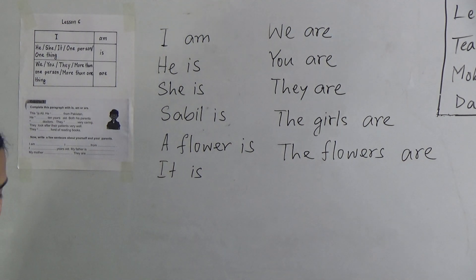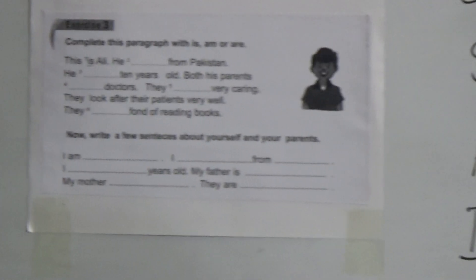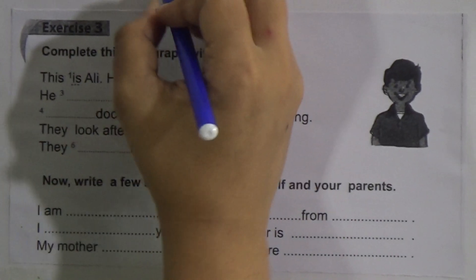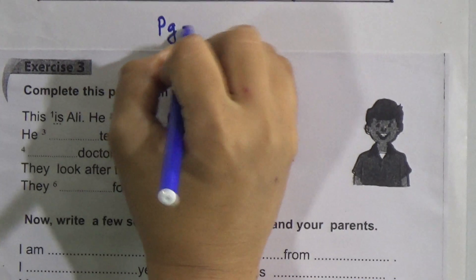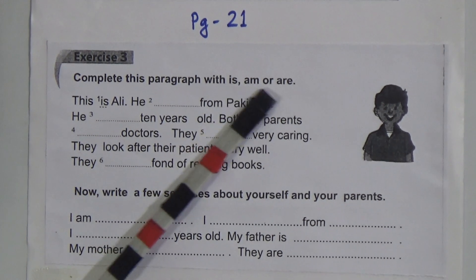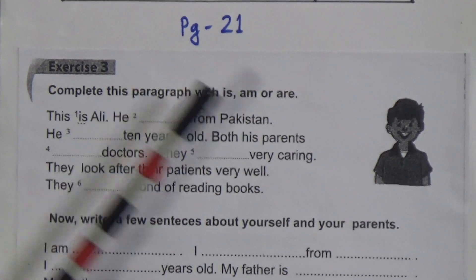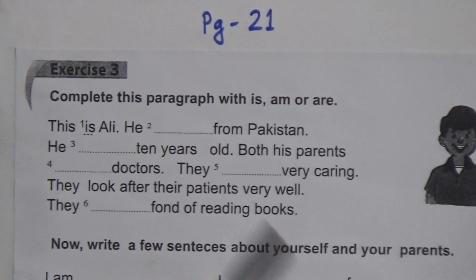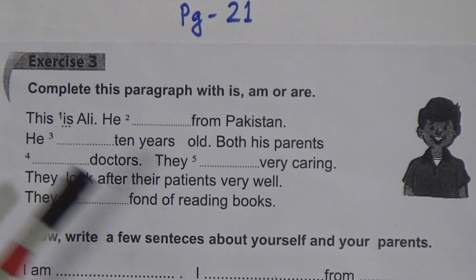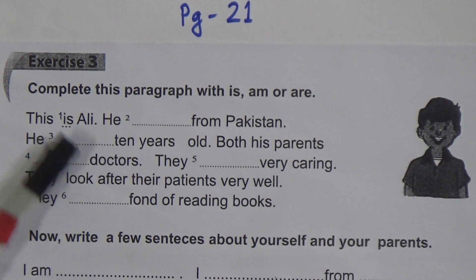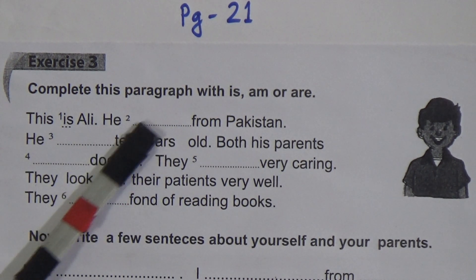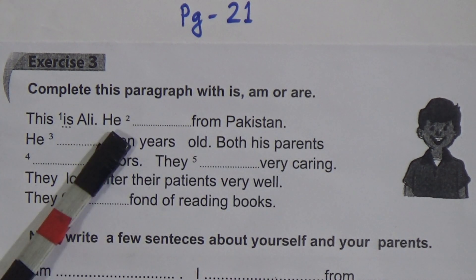Now we will do Exercise 3. Go to page number 21 in your book — page number 21, Exercise 3. The instruction says: complete this paragraph with 'is', 'am', or 'are'. You will look at the subject to decide. The first one has been done for you: 'This is Ali' — we are talking about only one person, so we use 'is'. Number two: 'He ___ from Pakistan' — 'he' is given here.